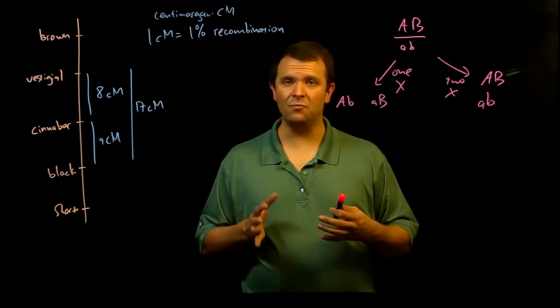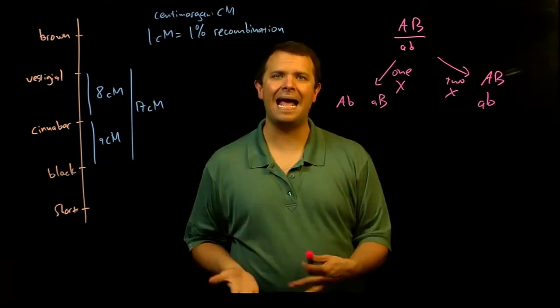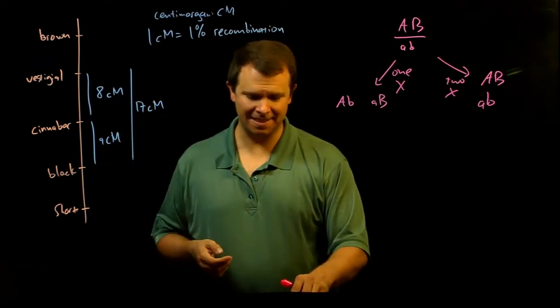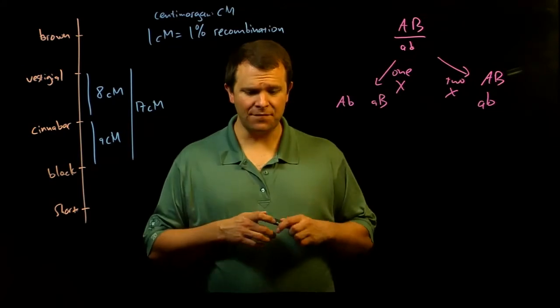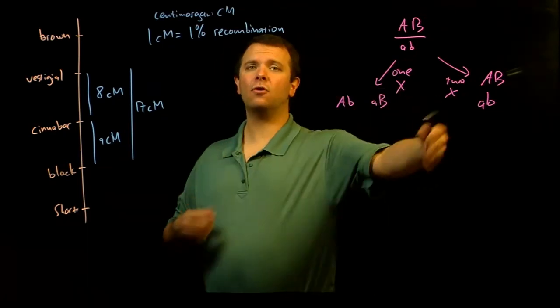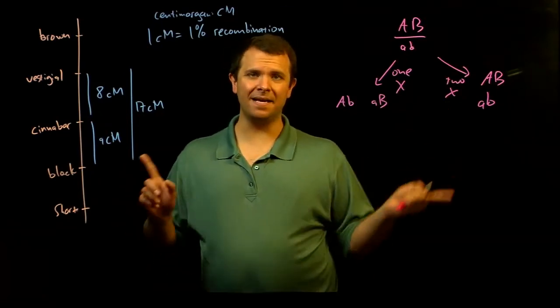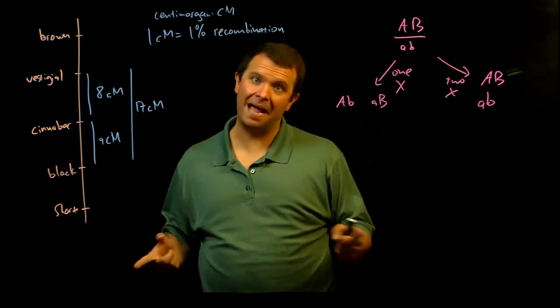And so this is why we say that genetic distance is only additive over short distances, right? Because if you've got a long distance, then there are crossing overs happening that you are missing, that you are not seeing because they cross over and then they cross back.